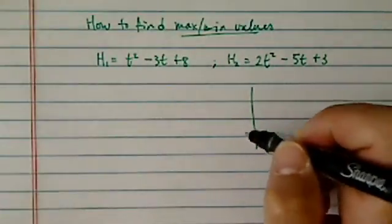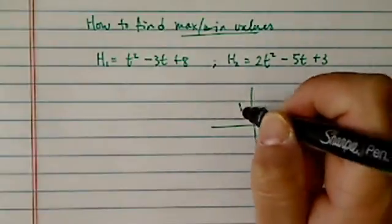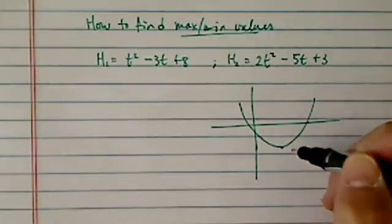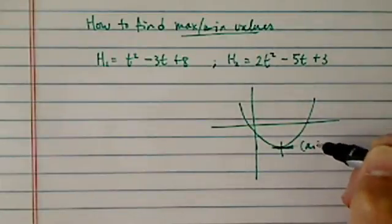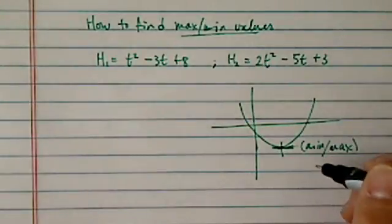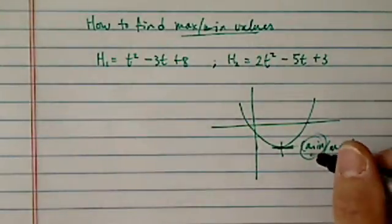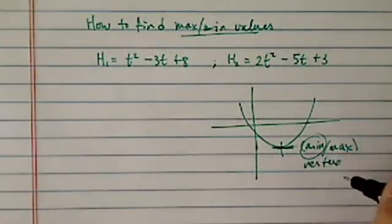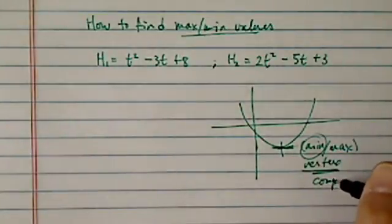Now there is a common question: which one is vertex and which one is roots? Vertex is also referred to as the extreme value. So here we have an absolute minimum. This is a vertex. You always find a vertex by completing squares.